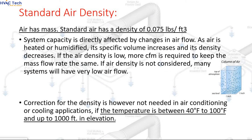Standard air density: air has mass. Standard air has a density of 0.075 lbs/ft³. System capacity is directly affected by changes in airflow. As air is heated or humidified, its specific volume increases and its density decreases. If the air density is low, more CFM is required to keep the mass flow rate the same. If air density is not considered, many systems will have very low airflow.